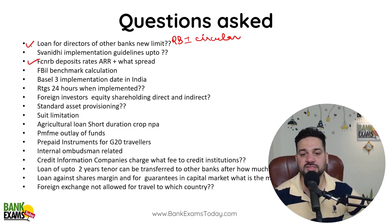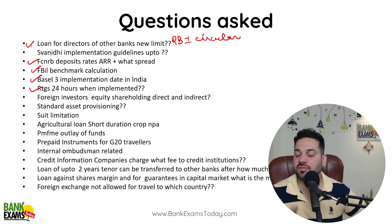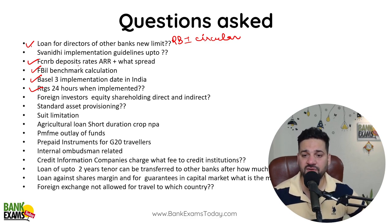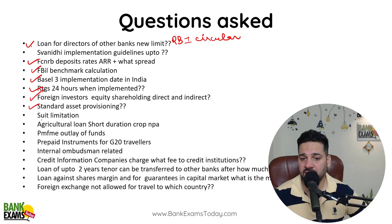The specific questions from RBI Circulars include: RTGS 24/7 availability from which date, Basel 3 implementation date, FVL benchmark calculation, FCNRB deposit rates, foreign investors' equity shareholding, and standard asset provisioning. This last one is from IRAC norms, which is basically an RBI Circular.